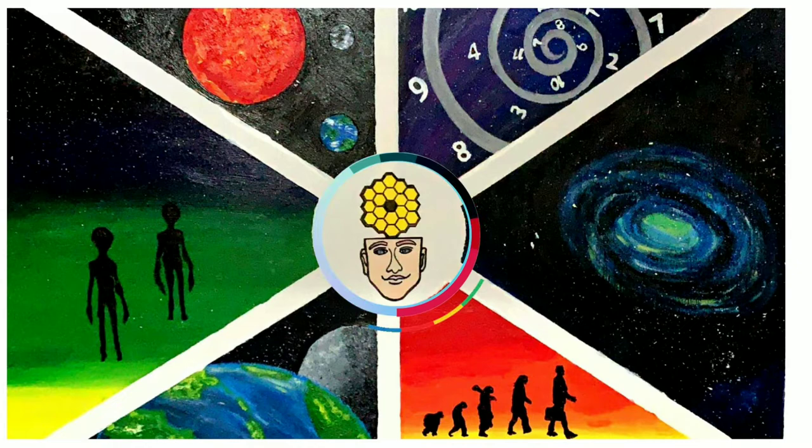To begin with, the center of the painting depicts that the existence of the Webb Telescope was brought about by the human mind.